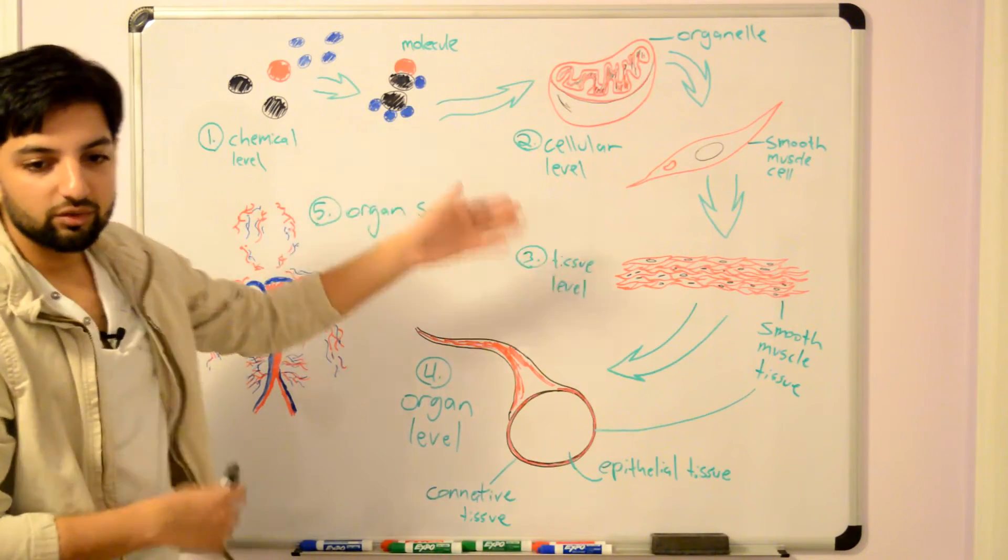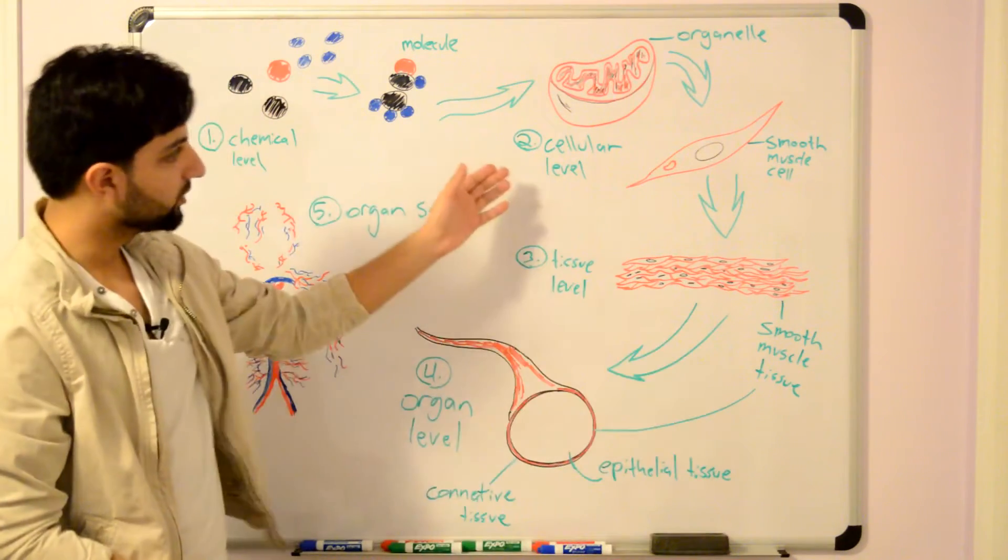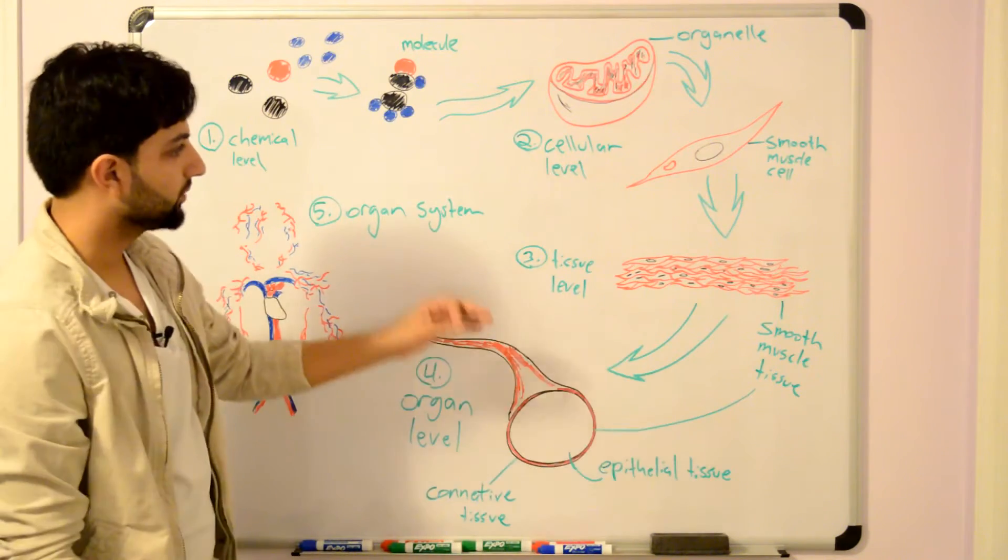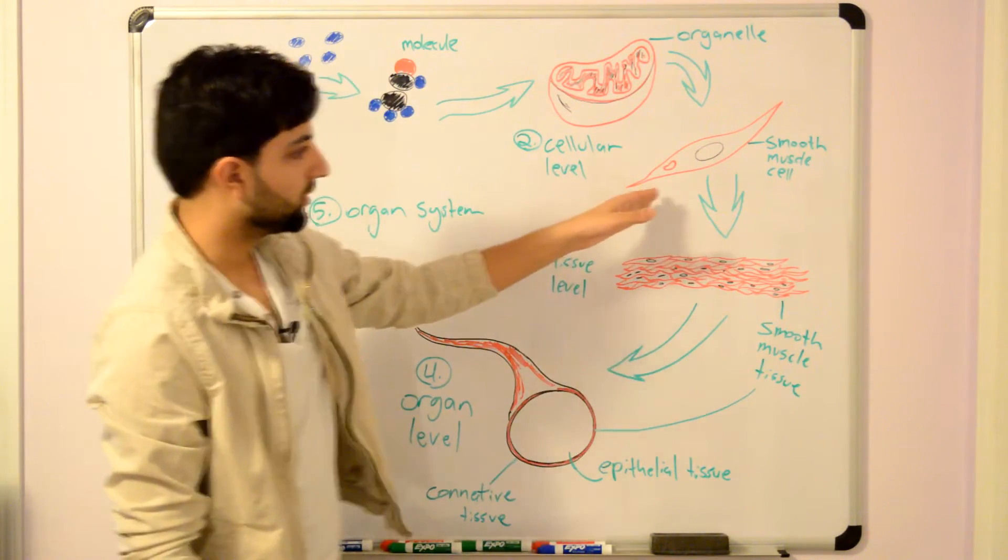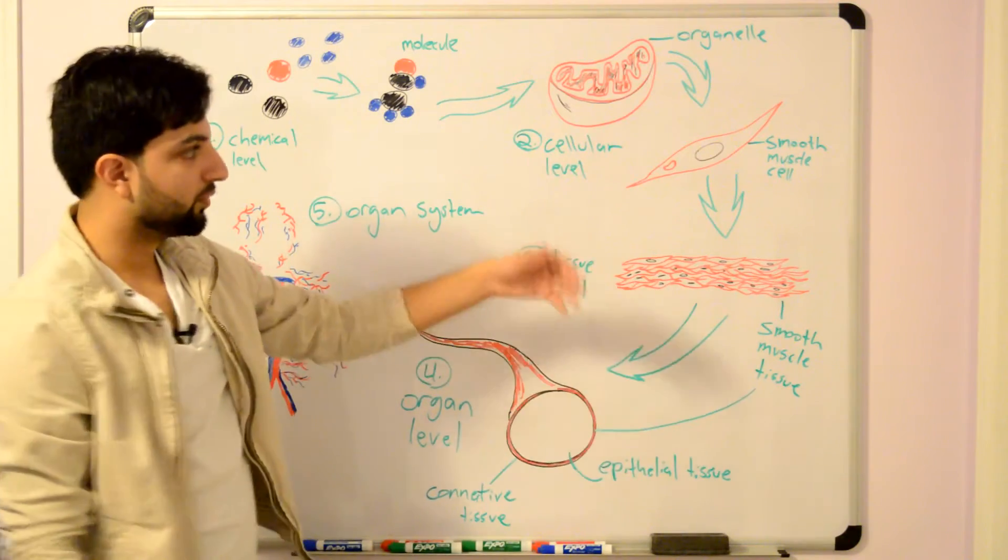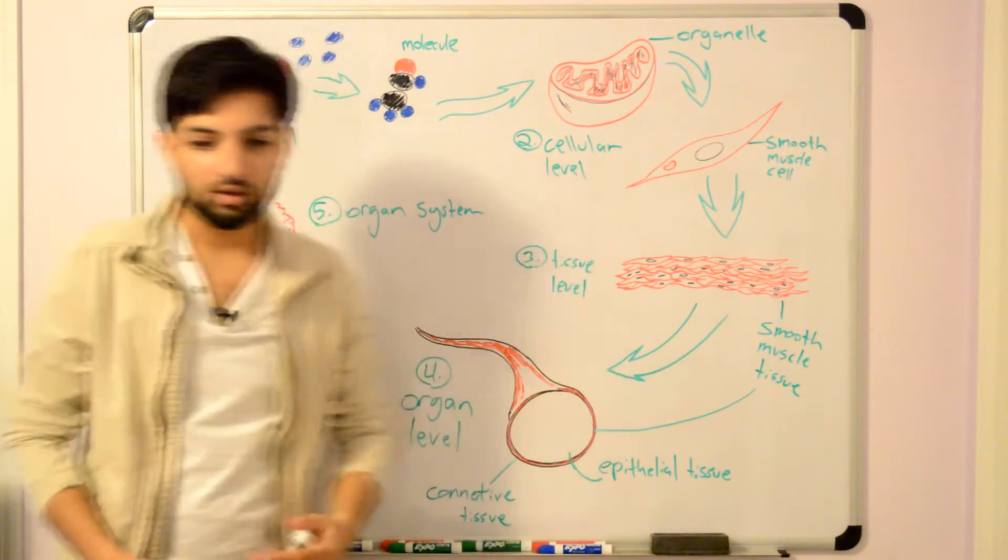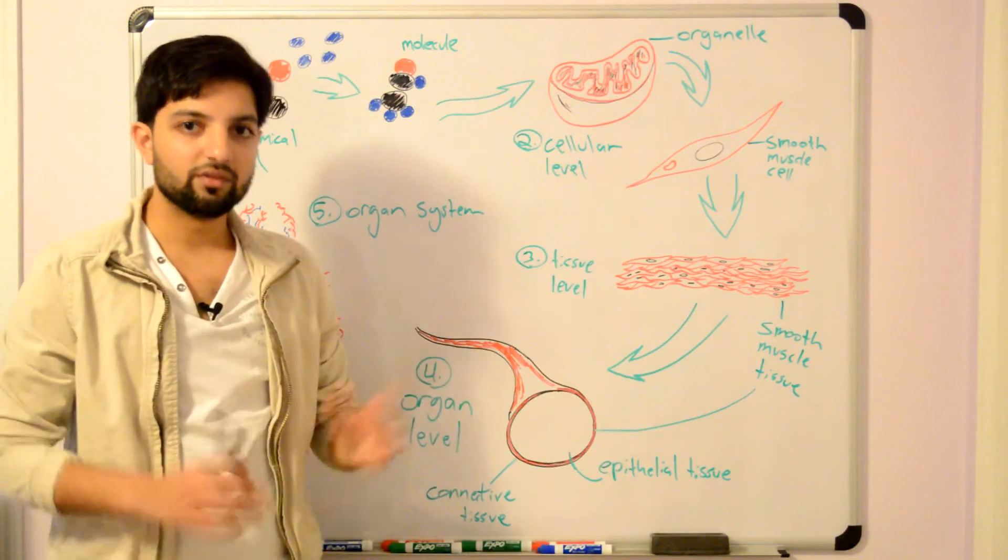Molecules afterwards come together to form organelles. Organelles are the basic components of cells and these are at the cellular level now. Organelles work together to perform the basic functions of that cell. Cells are the smallest unit of life.